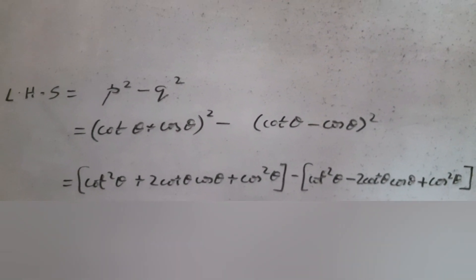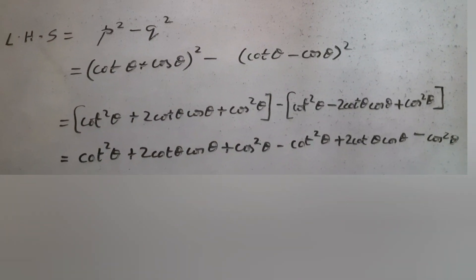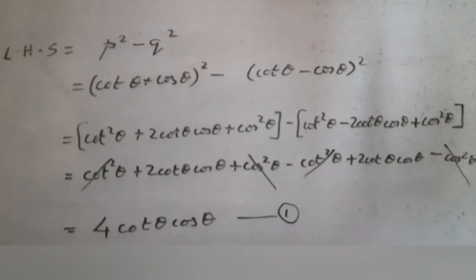Note that there is a minus between the two terms, so carefully rearrange. After cancellation, we get LHS equal to 4 cot θ cos θ.